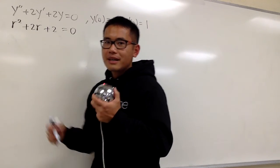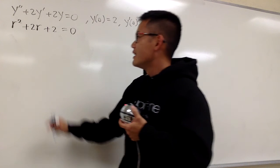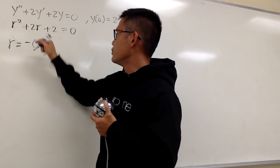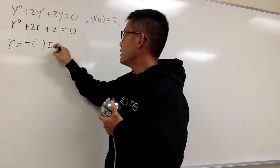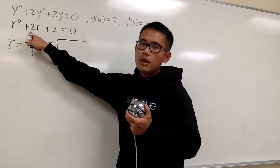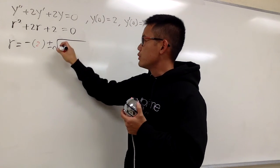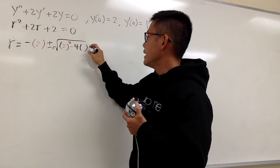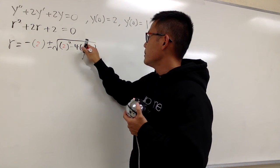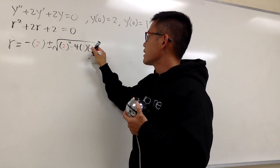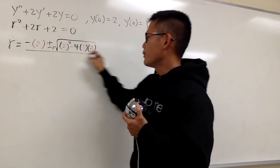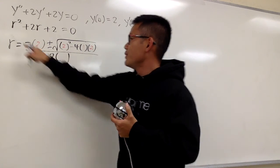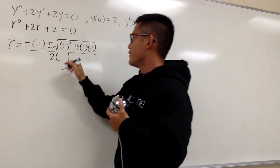Or you can do this by completing the square as well, if you like. r is equal to negative b, which is negative 2, plus or minus square root of b squared, which is 2 squared, minus 4 times a times c. Completing the square is actually easier, but many of you prefer to use the quadratic formula, so that's what I'm doing here.